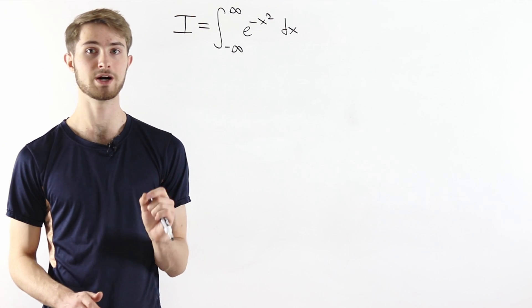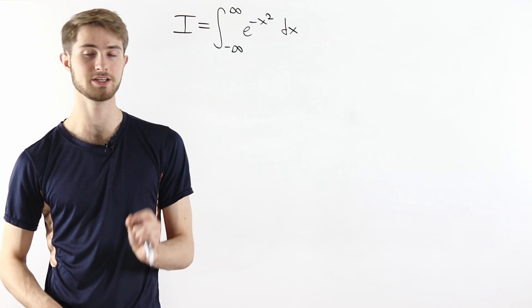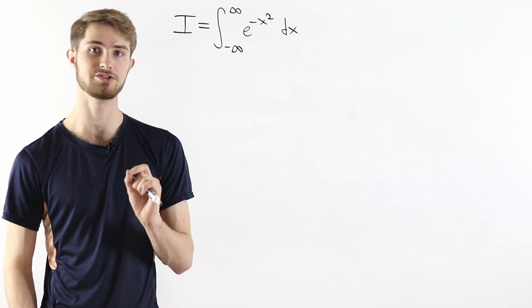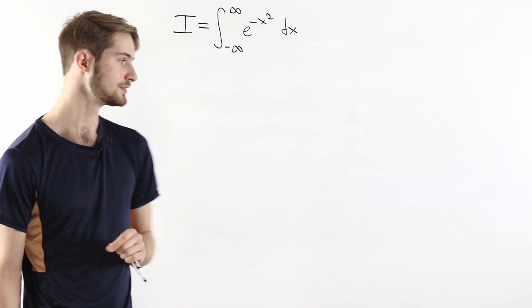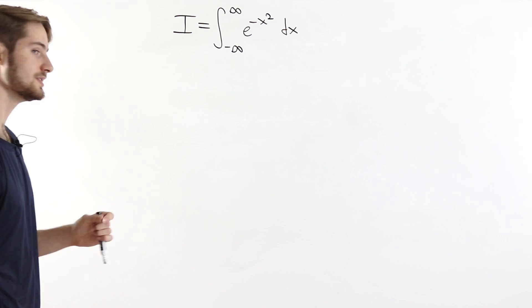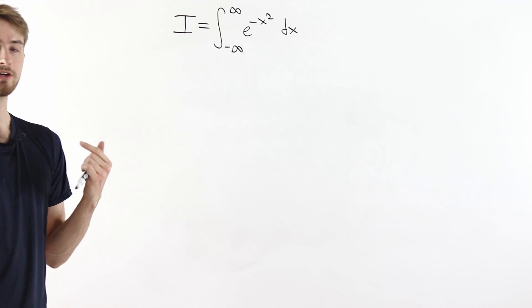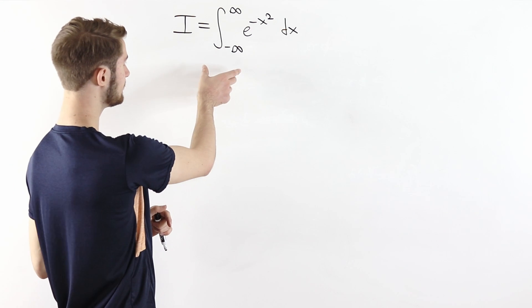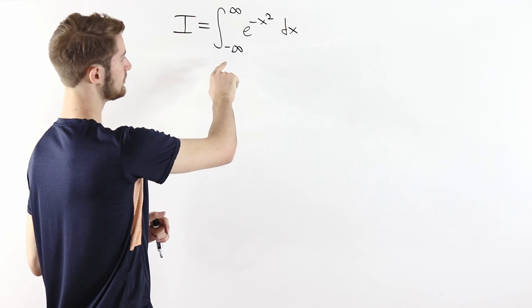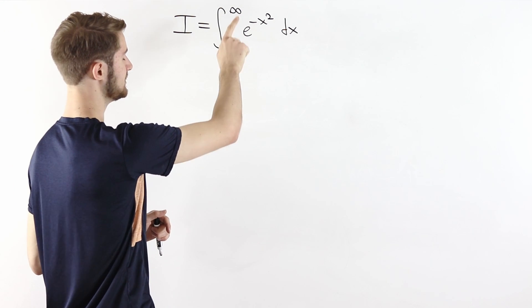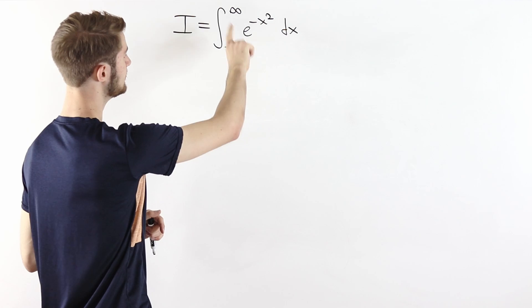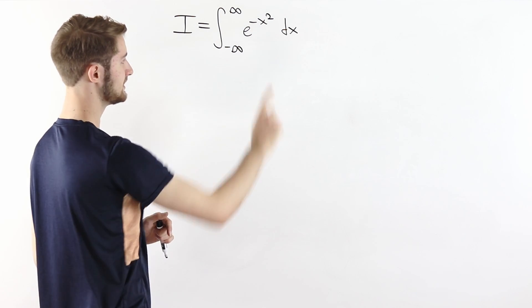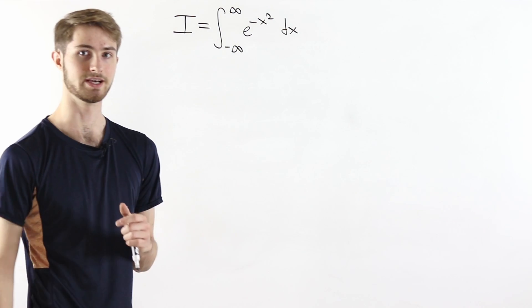We are going to talk about why the Gaussian integral trick is unique. You might have seen this method for evaluating the Gaussian integral, which is the integral from minus infinity to infinity of e to the minus x squared dx.